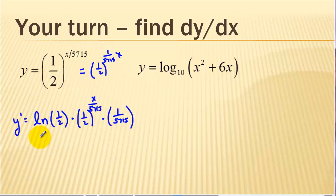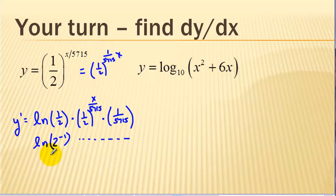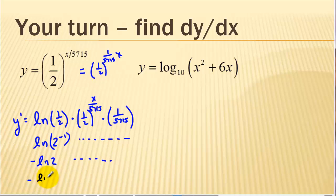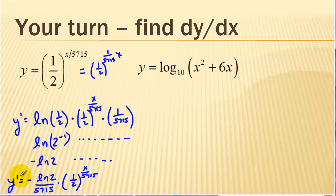Now a little simplification using some logarithm properties: 1/2 is the same thing as 2 to the negative first power. So ln of 1/2 is going to be negative — remember we can bring the exponent down using our logarithm properties. So now combining the constants, we end up with negative ln of 2 over 5715, times our exponential function. This is our first derivative — we end up with this constant, and again we had to take the natural log of the base.